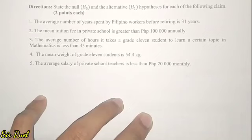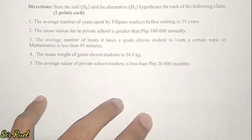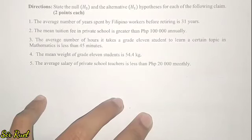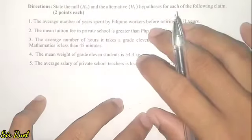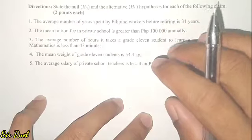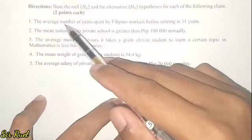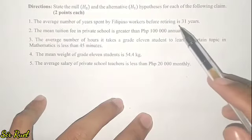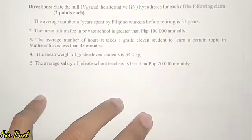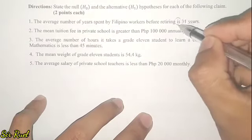Activity 2: State the null hypothesis and the alternative hypothesis for each of the following claims. Since these are claims, they are automatically either null or alternative — all we need to do is copy and then construct the other. Number 1: The average number of years spent by Filipino workers before retiring is 31 years. This is null because of the word 'is.' All we need to do is copy this as H0.